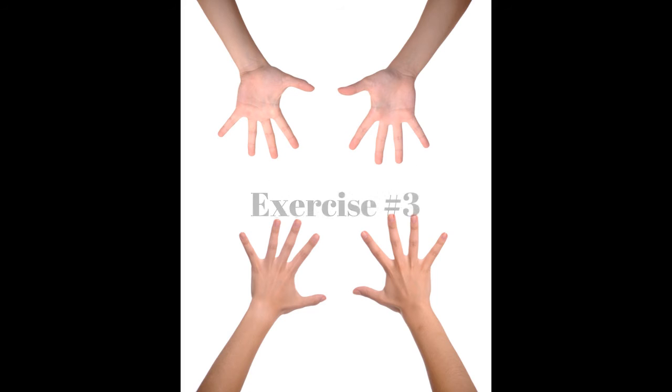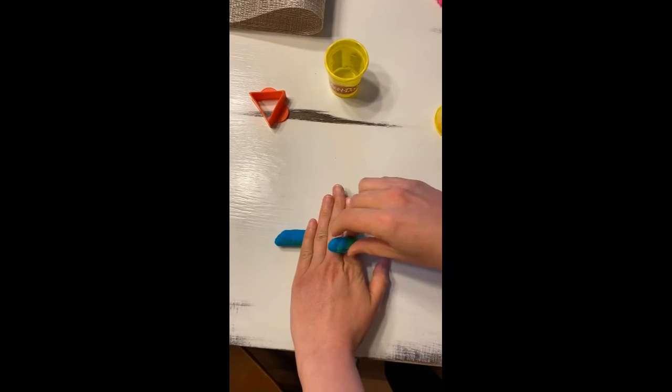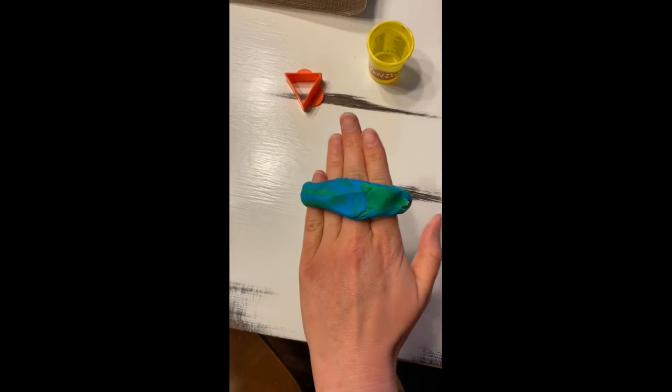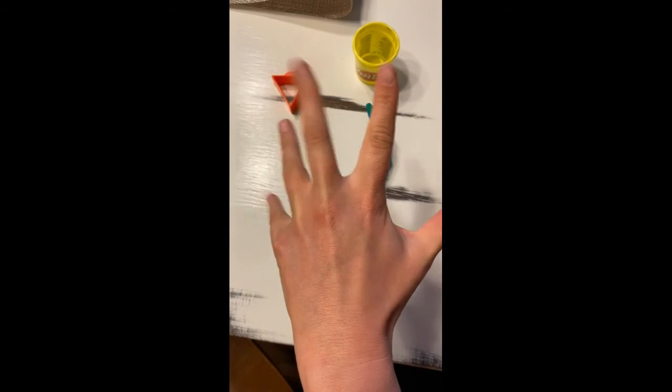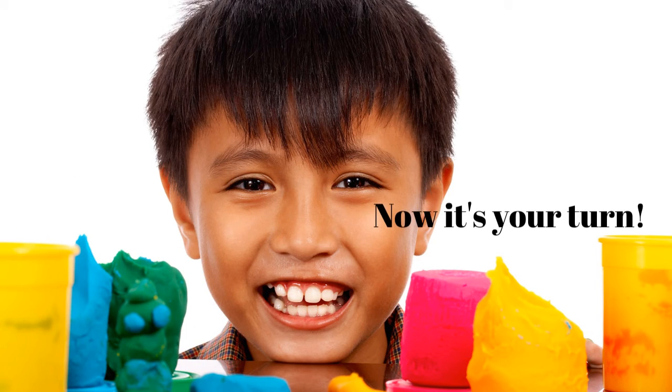Exercise number three. Roll another snake out and wrap it around your four fingers. Wrap it around tight. Now break free by stretching your fingers apart. Now it's your turn.